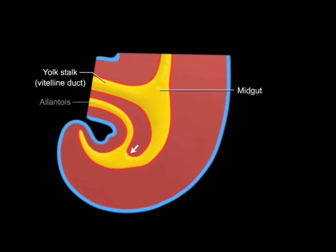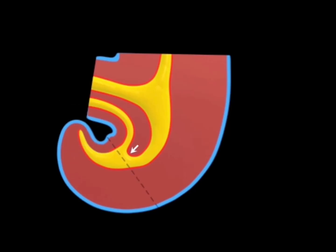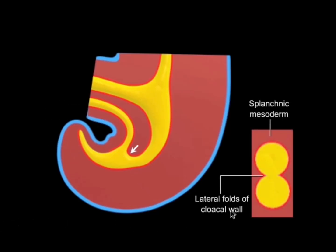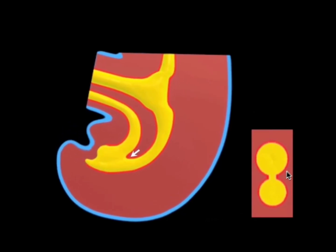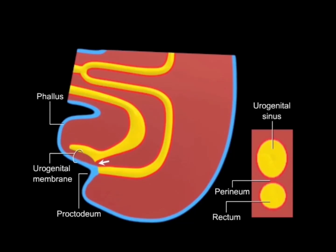For the last chapter: the hindgut gives rise to the distal third of the transverse colon, descending colon, sigmoid colon, rectum, superior two-thirds of the anal canal, and the epithelium of the urinary bladder and urethra. It is supplied by the inferior mesenteric artery. The terminal end of the hindgut expands to form the endoderm-lined cloaca, which communicates with the allantois. At around week six, a mesenchymal wedge called the urorectal septum forms and partitions the cloaca into a ventral urogenital sinus and a dorsal anorectal canal.